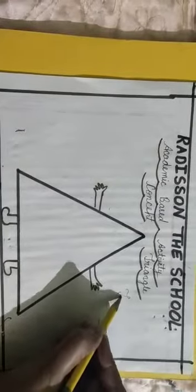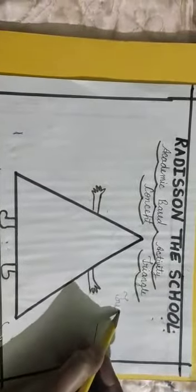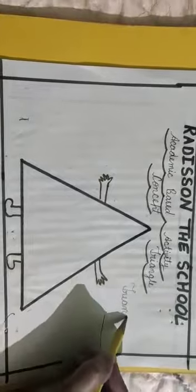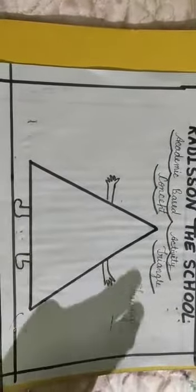T-R-I-A-N-G-L-E. Triangle. A triangle has three sides. A triangle has three sides.